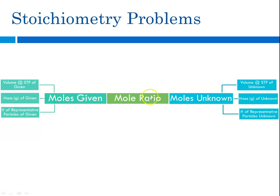Then you look at the equation — this is the stoichiometry part — to get from moles of what you were given to moles of what you're trying to find. And then finally, once you're at moles, it's a mole roadmap thing. You can go to volume using 22.4 liters at STP, you could go to grams using molar mass, and you could go to the number of representative particles using Avogadro's number, 6.02 times 10 to the 23rd pieces.